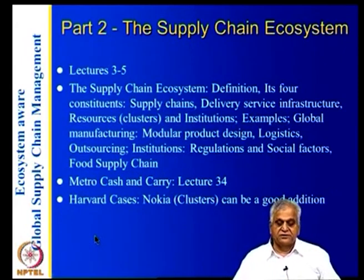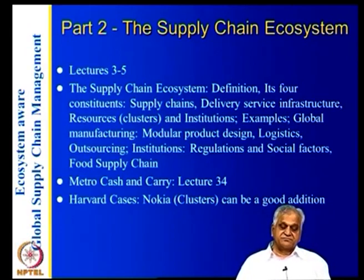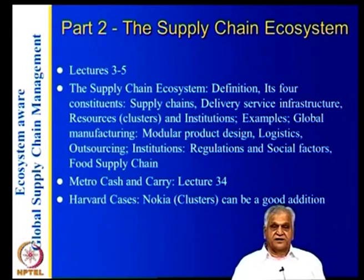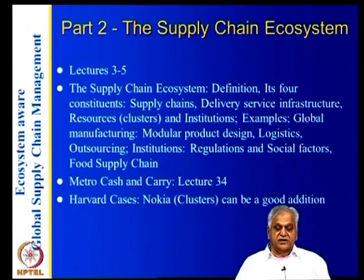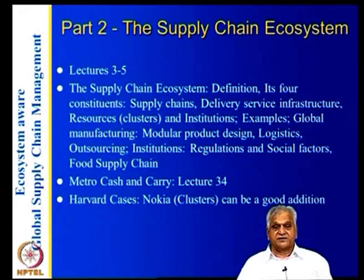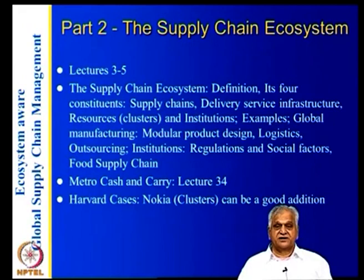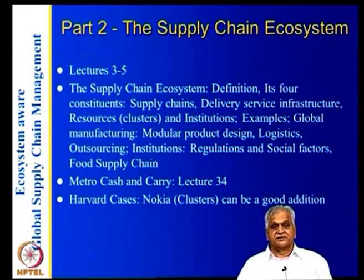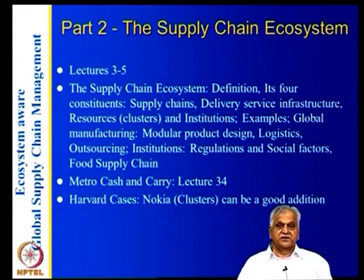Part 2 introduces the supply chain ecosystem — its definition and four constituents: the supply chain, delivery service infrastructure, resources, and institutions. Supply chains are usually treated in isolation, but they are affected by resources. For example, to run the supply chain you need power, water, industry clusters for components, transportation, port infrastructure, and banks to give you loans and letters of credit. Resources become an important part of the supply chain, although they are not considered today.